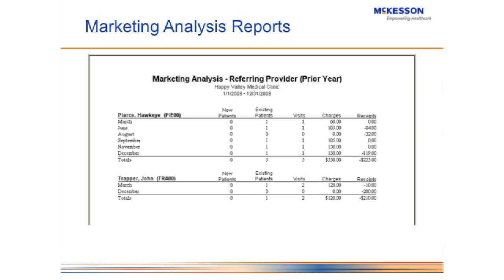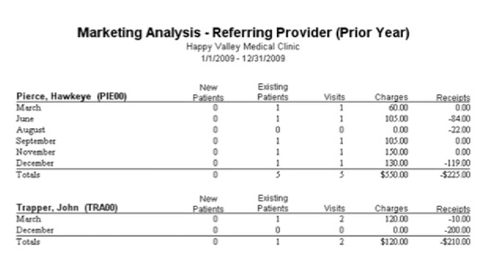Here is our 'who do we send birthday cards to' report — this is a marketing analysis report by referring provider. Here we can see, by referring provider, how many new patients they referred to us, how many existing patients they sent over for referrals during that time period, the number of visits they sent in that particular time period, plus not only the charges but how much came in on payments from each of those different referring physicians.